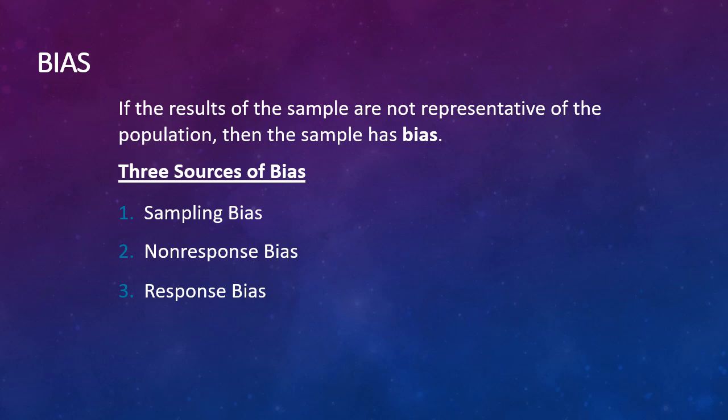If the results of the sample are not representative of a population, then the sample has bias. There are three different types or sources of bias: sampling bias, non-response bias, and response bias.